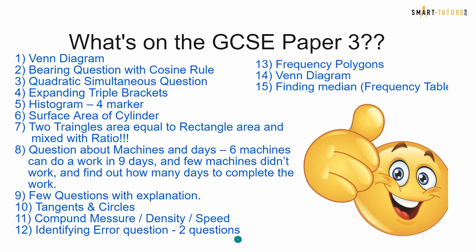We haven't seen Paper 3 yet and we are going to go through the solutions in the coming days. Compared to the 2018 paper, the majority of comments show Paper 1 as the hardest and Paper 2 as the easiest, with Paper 3 somewhere in between. What's on Paper 3? Topics include: Venn diagram, bearing question with the cosine rule, quadratic simultaneous equations, expanding triple brackets, a four-mark histogram question, surface area of a cylinder, two triangles area equal to a rectangle area mixed with ratio.